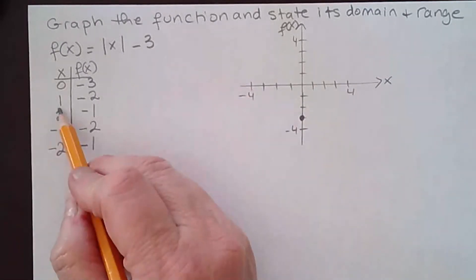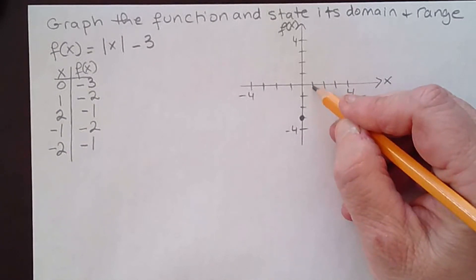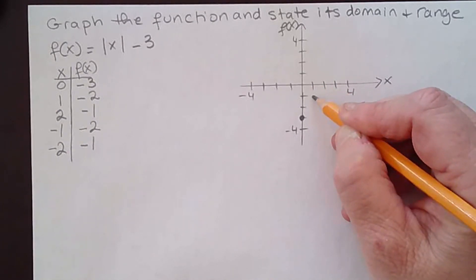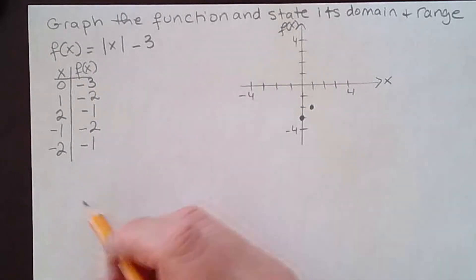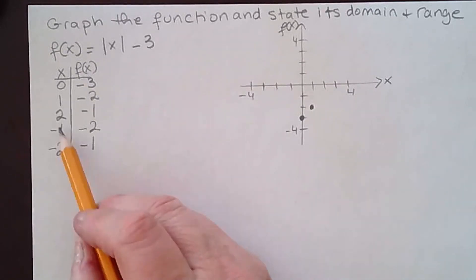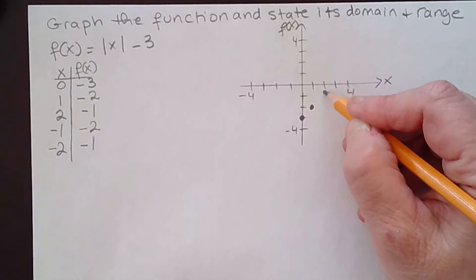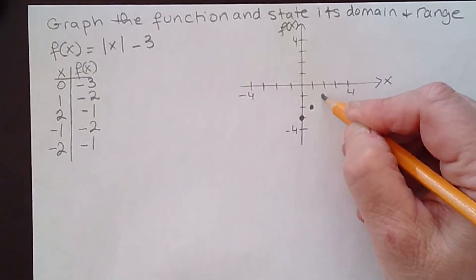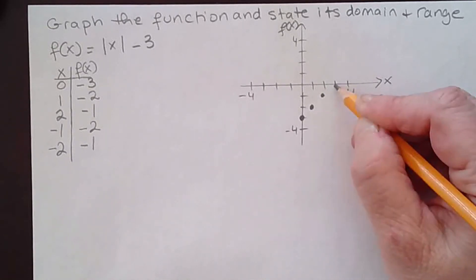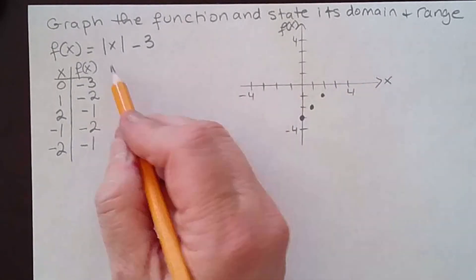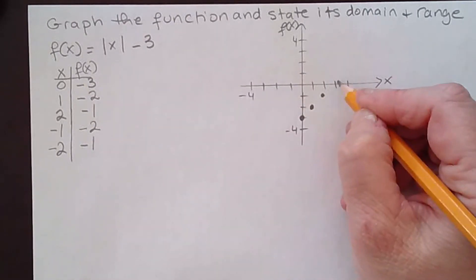When x is 1, f of x is negative 2. So x is 1 right here, f of x is negative 2 — so 1, 2 down here. And when x is 2, f of x is negative 1, here's another point right here. You realize that if you selected 3, the absolute value of 3 is 3, and 3 minus 3 is 0 — so there's a point right here.